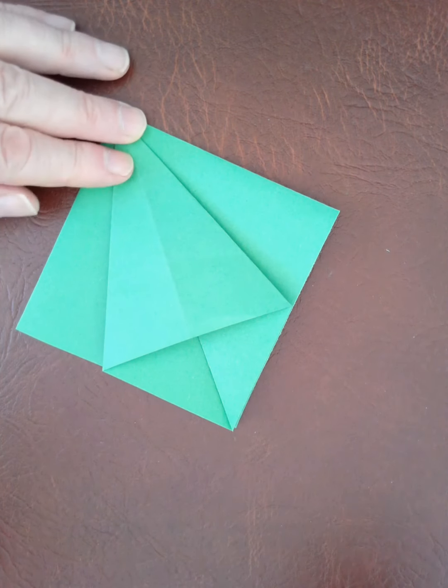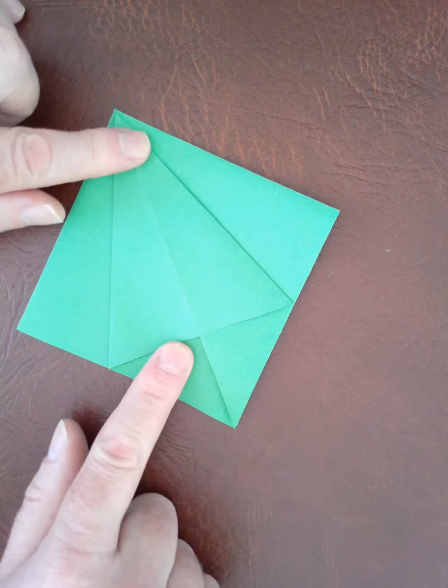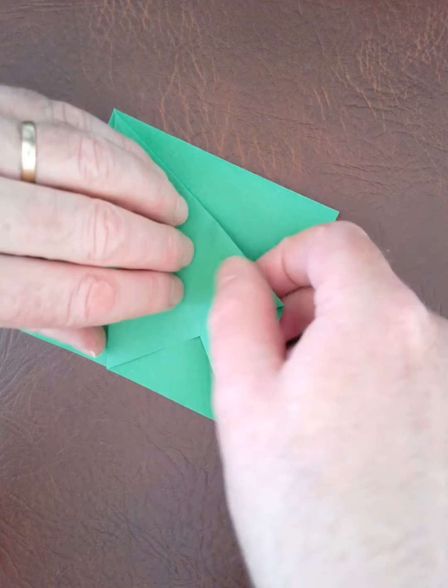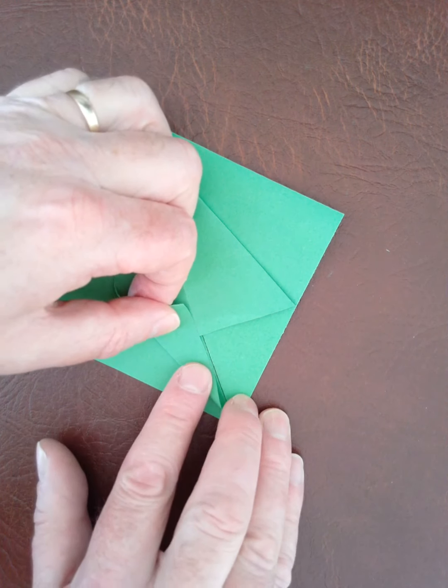I'm going to do this times four but we'll just do this one to begin with. So I take the flap, fold it down and then I'm going to take this edge here, fold it into the middle.